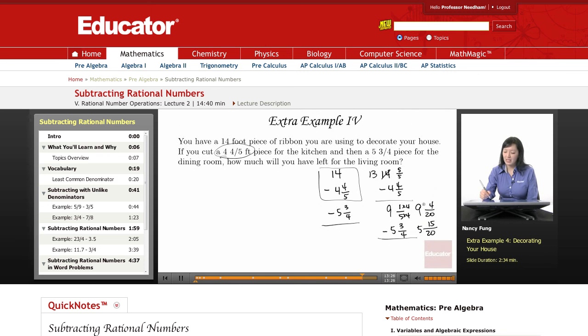Well the 4 is not big enough to take away the 15. So let's borrow, 8 left over, 8 whole and then 20 new pieces plus the 4 from before now gives me 24. 24 minus 15 is 9 over 20. And 8 minus 5 is 3. So we have 3 and 9 twentieths feet of ribbon left over for the living room.